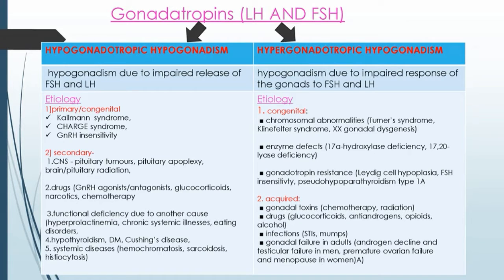Gonadotrophins: LH and FSH diseases are divided into Hypogonadotrophic Hypogonadism and Hypergonadotrophic Hypogonadism.